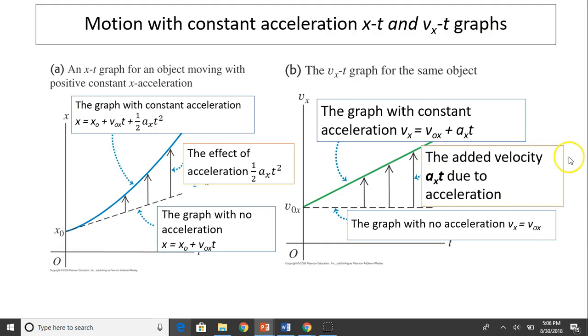Motion with constant acceleration, vt and xt graph. In the xt graph, the graph is a parabola. There are three parts of this graph. First is this dashed line, which indicates when there is no acceleration. When there is no acceleration, displacement is just x0, your starting position, plus v0x times t. Now, the effect of acceleration changes the displacement by a factor of 1/2 axt squared. See, this part is the change effect due to acceleration. As a result, the total displacement is the part that has no acceleration plus the effect of acceleration.